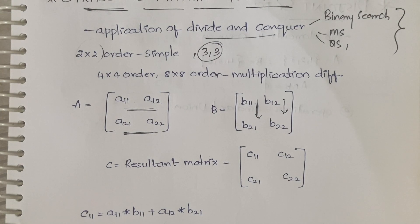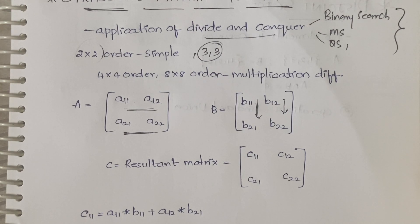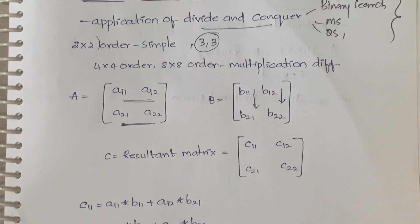But if the order is increasing, then how can you multiply two matrices? When the order is increasing, it becomes hard to do the multiplication. In order to reduce the complexity of that, Strassen has given us something. Let us see what he gave us.